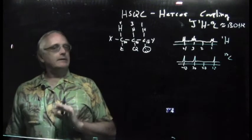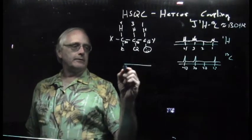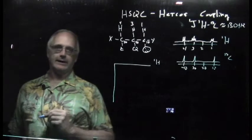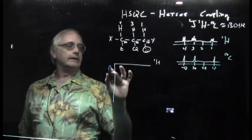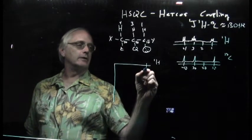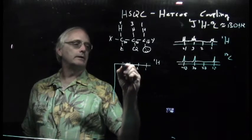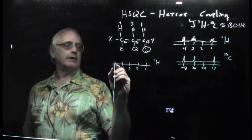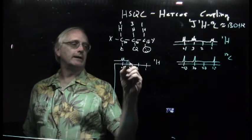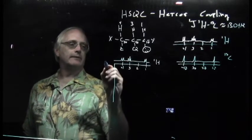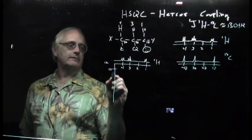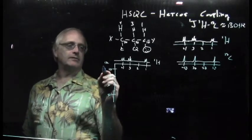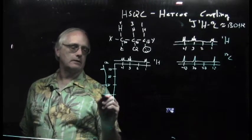Now, the HSQC, the heteronuclear correlation, remember these 2D experiments are characterized by two frequency axes. In our conventional presentation, this is the hydrogen presentation up here on the horizontal axis. And so I am going to put in the numbers here: one, two, three, four. And we see a representation, generally it's called a projection of the proton spectrum. On the vertical axis, we see the carbon 13s: 10, 20, 30, 40. And we see a representation of that spectrum here.